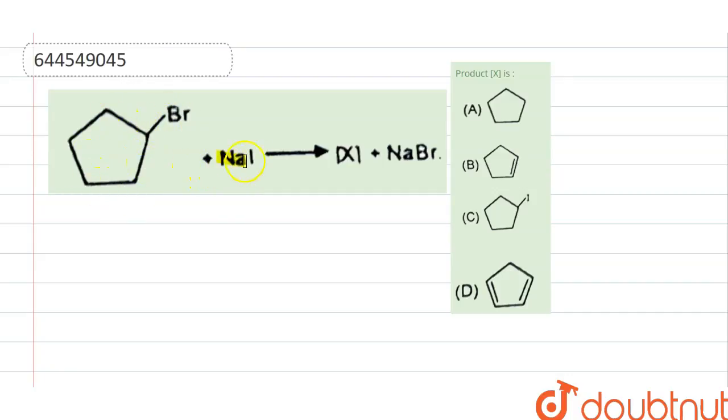Bromocyclopentane reacts with NaI for formation of X plus NaBr. So we have to find out what is X. Four options are there. So let's start the answer.